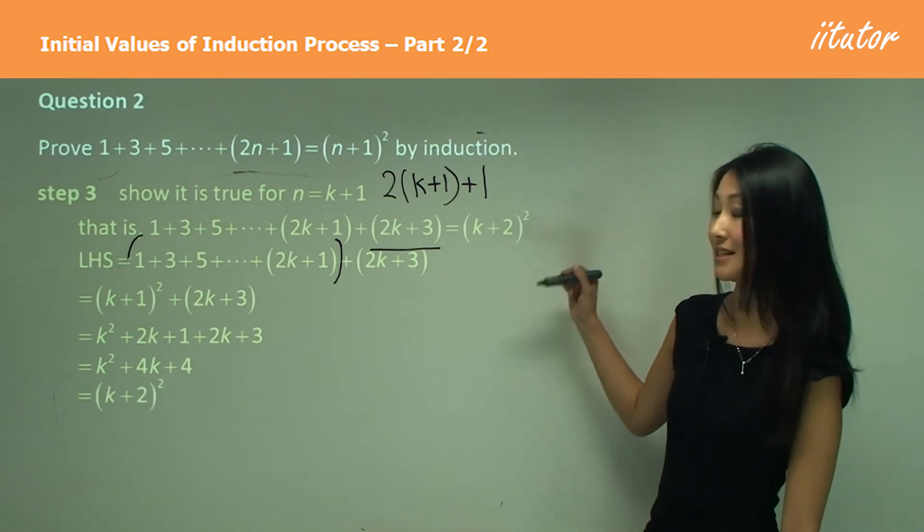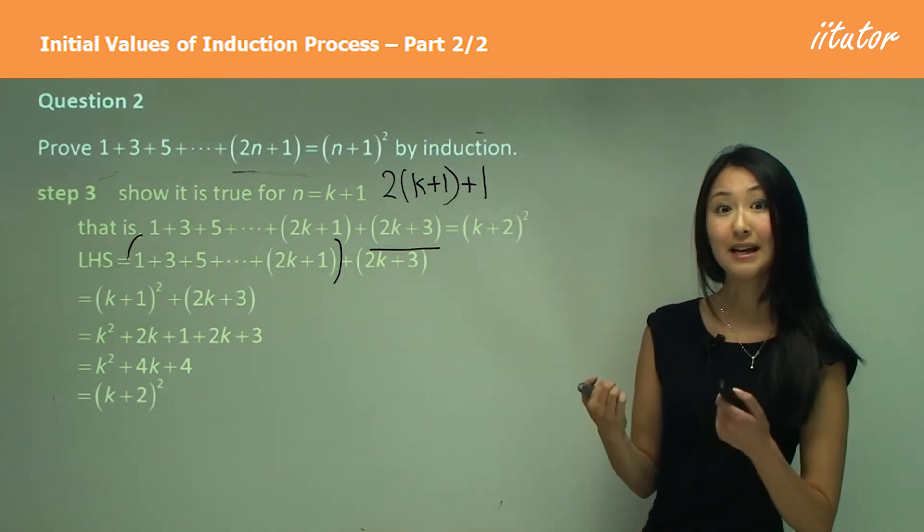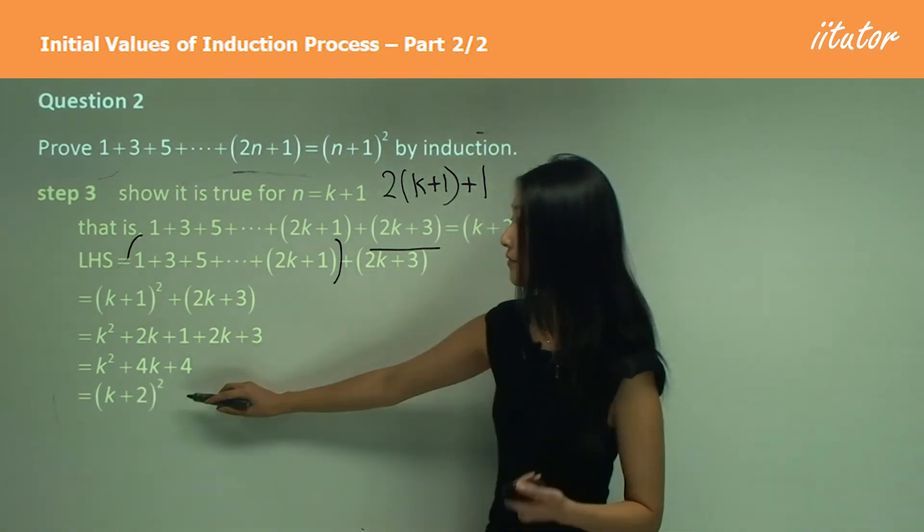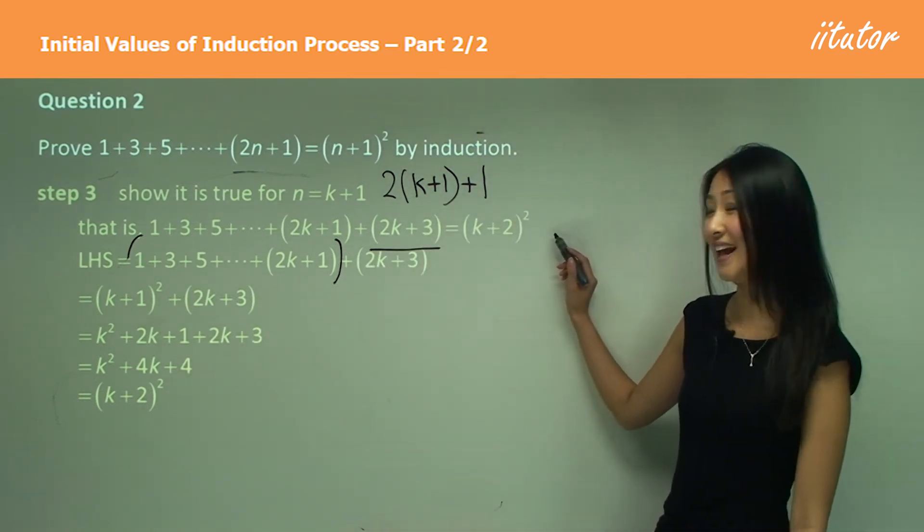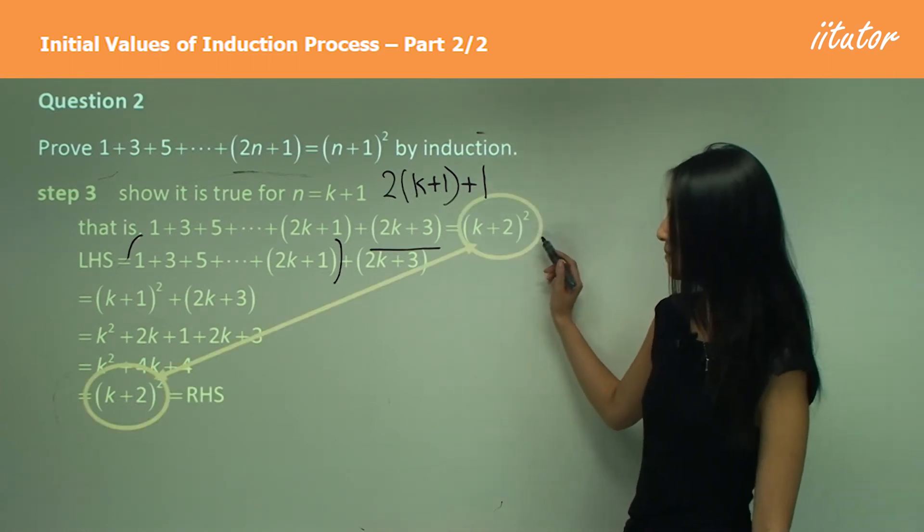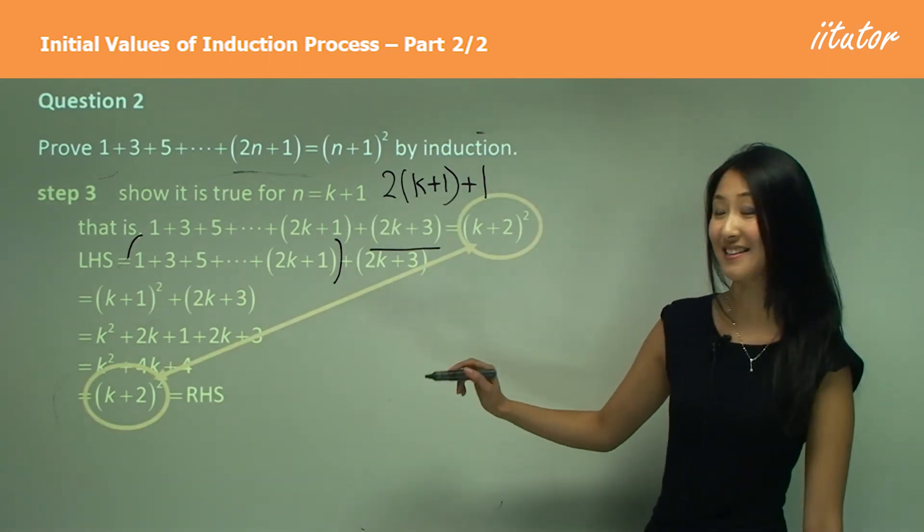And now we know I just need to factorize that, make into a perfect square of k plus two squared. And you can see that looks exactly like the right hand side.